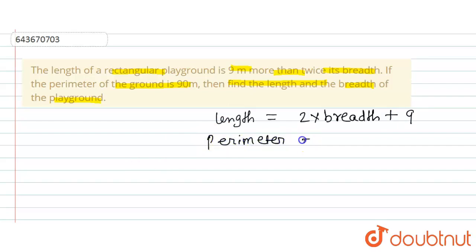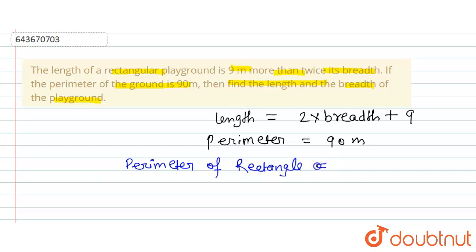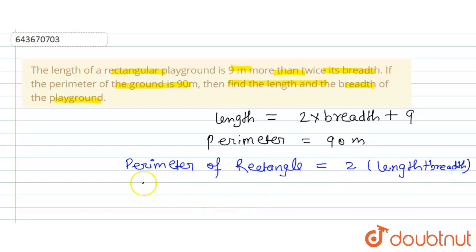As we know, the perimeter of a rectangle is equal to 2 times of length plus breadth. We will apply this formula. Since the perimeter is already given as 90 meters, we write: 90 = 2 times of (length + breadth).